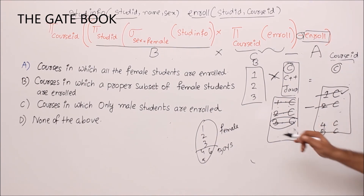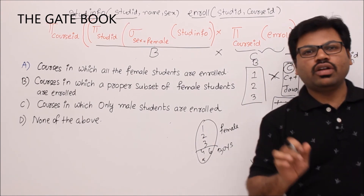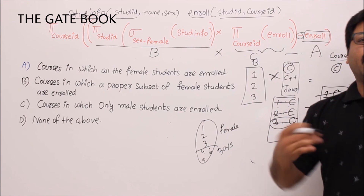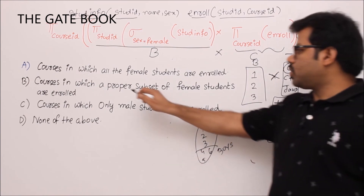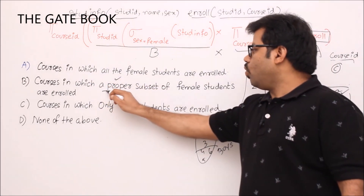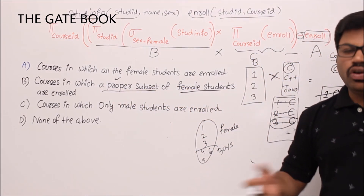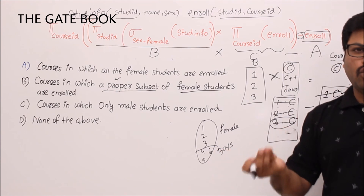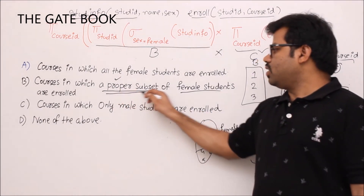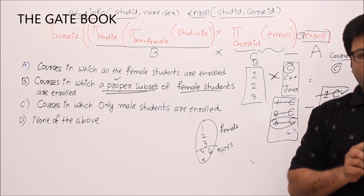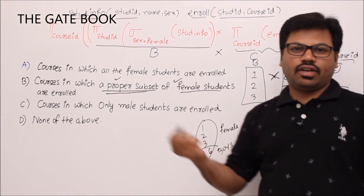So the final answer is: the output contains courses not taken by all female students — i.e., courses where only a proper subset of female students are enrolled. Option B is correct. A proper subset means at least one female student is missing from that course.